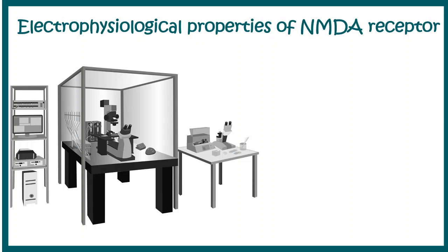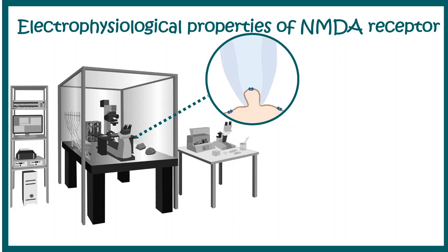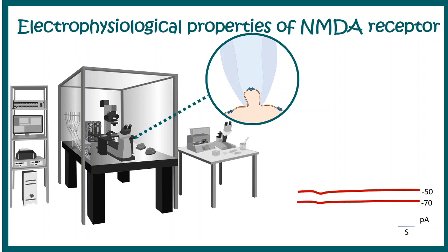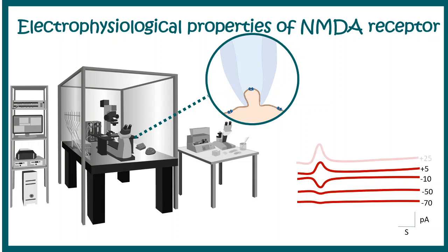In order to understand the NMDA receptors, we have to understand their physiological properties, which can be done by whole-cell recording. In this patch clamp recording, we are recording in a voltage clamp method — the voltage is fixed at a particular value and we record the current through it. At minus 70 millivolts, we see no current. At minus 50 millivolts, we see miniscule currents. At minus 10, there is some amount of current. At plus 5, the current direction is reversed and there is a substantial amount of current, which increases with positive voltage.